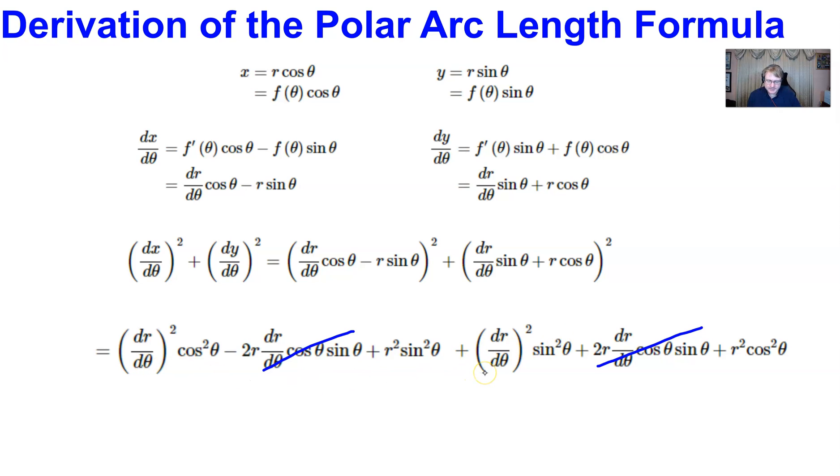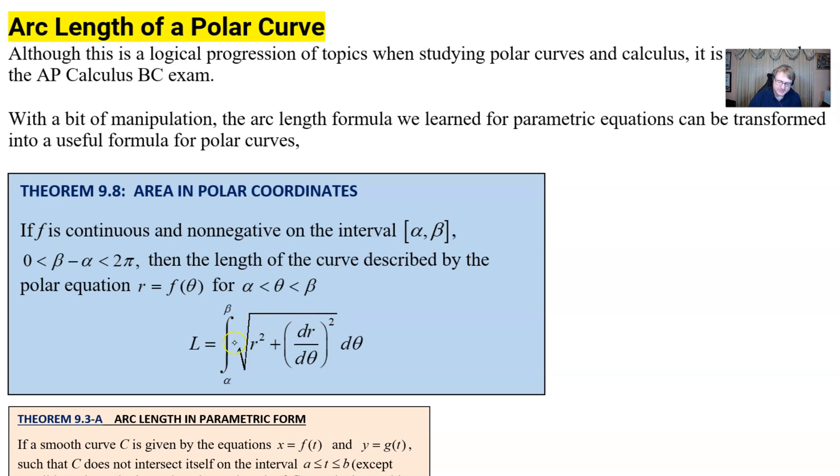But now things start to get kind of neat because if you look at this very long complicated expression, you notice that this giant term and that giant term will indeed cancel away. And then when you start combining some like terms, you may notice that you can do some factoring. That is, the (dr/dθ)² can factor out of these two terms, leaving me with cos² θ + sin² θ, and then r² can factor out of these two terms, once again leaving cos² θ + sin² θ, which is so convenient because sin² θ and cos² θ add up to be one. And boy, does that look familiar because this is inside of the square root of our arc length expression.